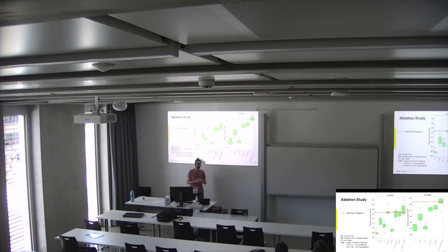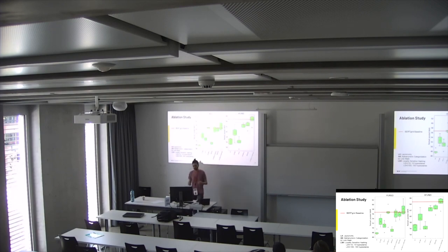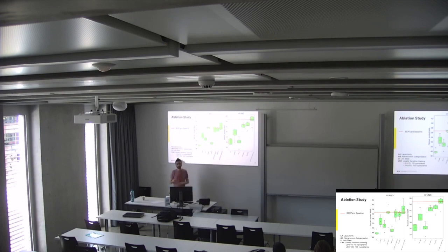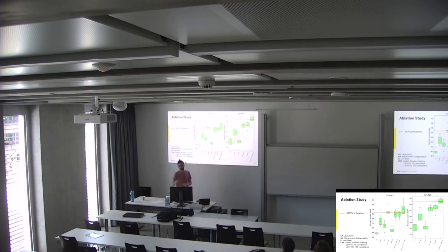In an ablation study we tried to find which component has the most impact. The red line shows where the BERTGrid baseline performance is. For the FUNSD dataset, already with only the layout mask, the alphanumeric encoding, and the line mask, we can already match the performance of BERTGrid without even needing the locality sensitive hashes. But for other datasets like XFUN, we need the locality sensitive hashes to increase model performance to match or exceed BERTGrid.